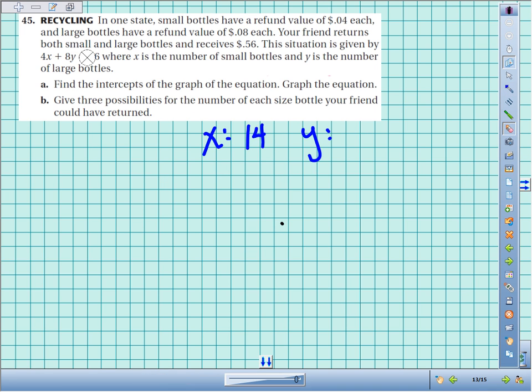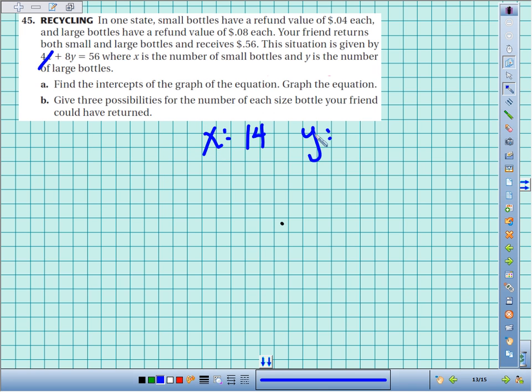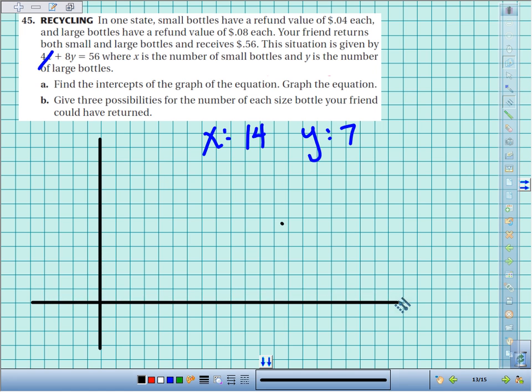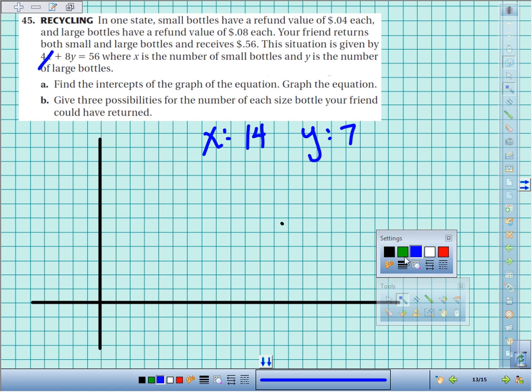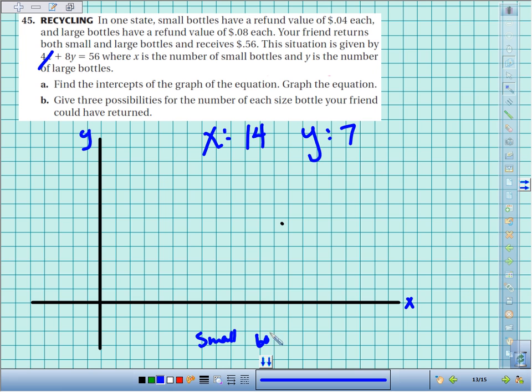If I want to find the y-intercept, then I set x equal to zero. So 4 times 0 is 0. 56 divided by 8 is 7. So if we're going to graph this, we've got our y and our x. And x was representing small bottles. Y was representing large bottles.